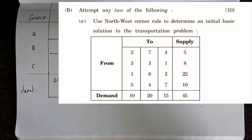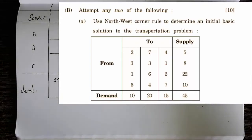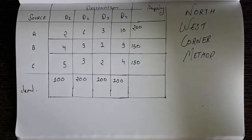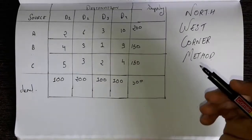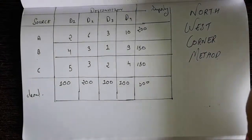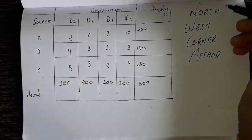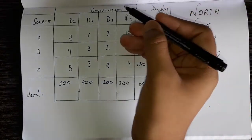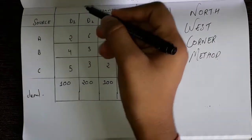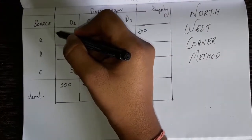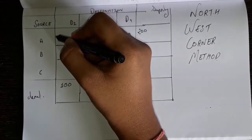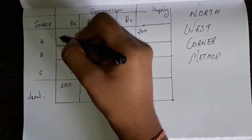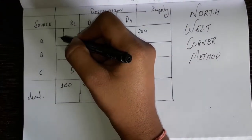Today we are going to solve this question which is displayed on the screen, and the question displayed on the screen and the book is just the same. So now what you have to do — because the name of the method suggests North West, you have to go to the North side which is the upper side, and the West Corner which is this. This is the North West Corner.